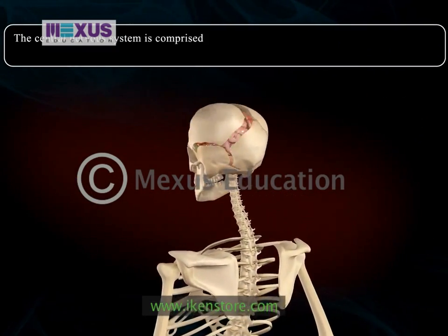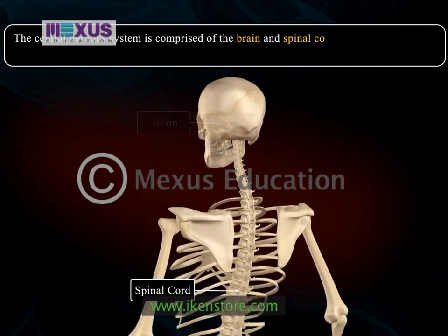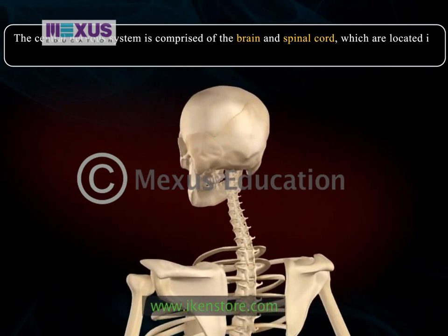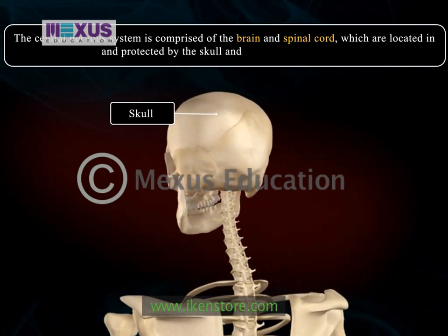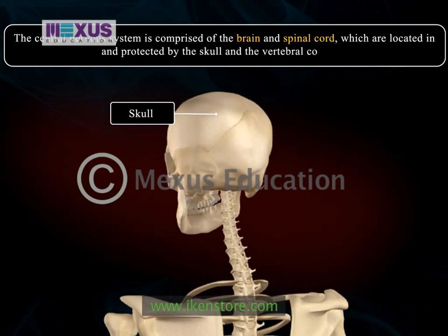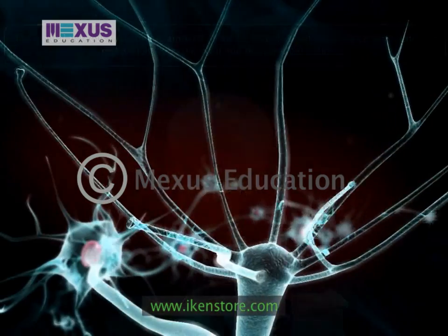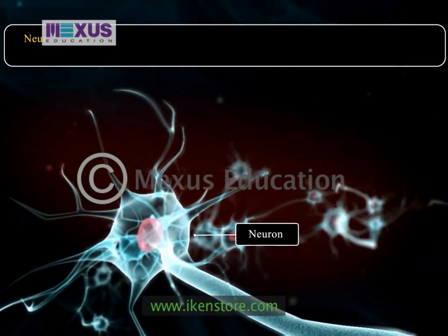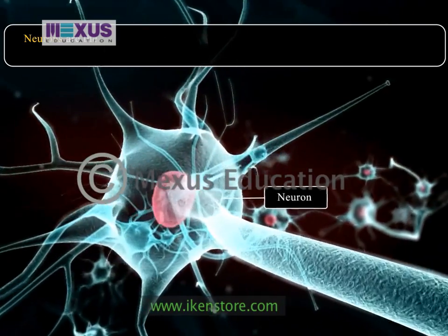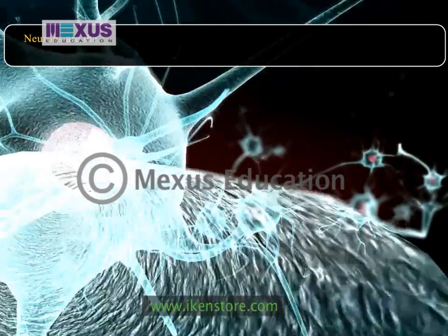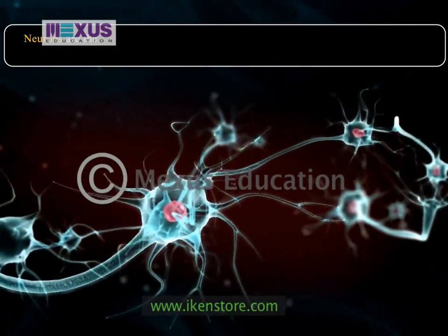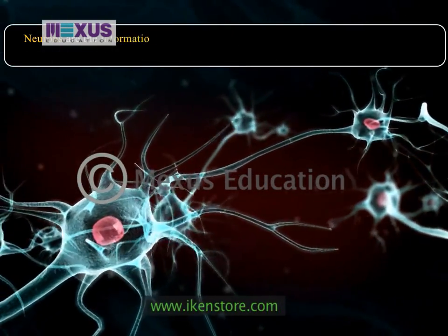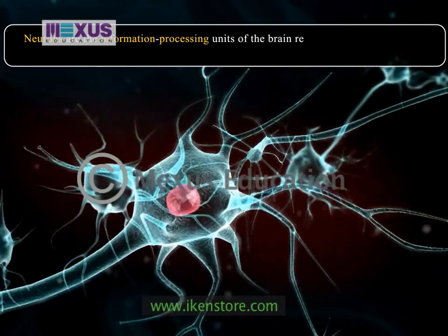The central nervous system is comprised of the brain and spinal cord, which are located in and protected by the skull and the vertebral column. Neurons are the basic building blocks of the nervous system. These specialized cells are the information processing units of the brain.